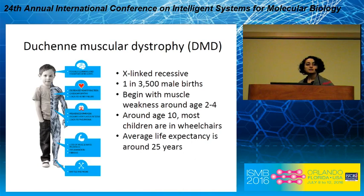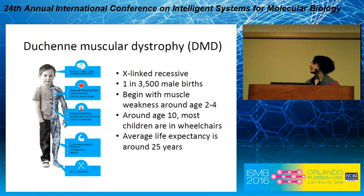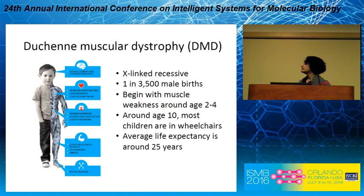Duchenne muscular dystrophy is a lethal genetic disorder that is seen in one out of every 3,500 boys. The characteristics of DMD include progressive muscle deterioration, skeletal muscle deterioration, resulting in delayed developmental milestones. The average life expectancy for the majority of patients is about 25 years. DMD is caused by mutations in the DMD gene, which causes the lack of dystrophin production.